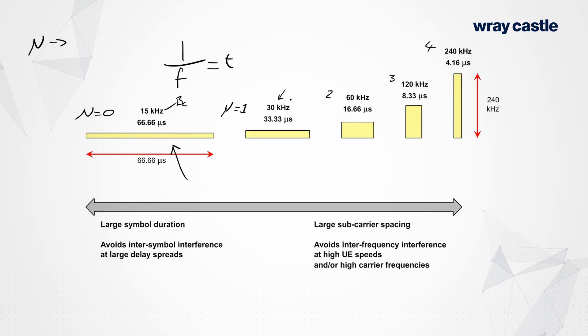But the answer then, of course, is that where you have the wide open area, you don't use the 30kHz numerology, you use a 15kHz numerology. And as you start to approach the suburban, urban, and dense urban areas, you can choose then higher and higher numerologies.